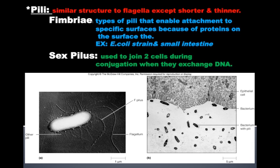Pili are also external structures still made out of protein filaments, similar to flagella, but they're shorter and thinner. Looking at picture A at the bottom, the flagellum is labeled and it's much thicker, while the pili are tiny in comparison.